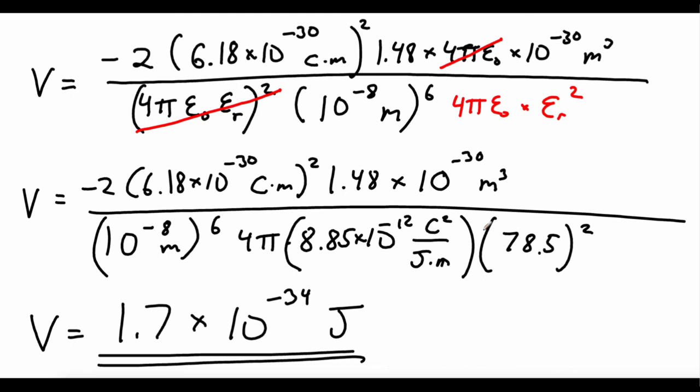Previously, we worked a problem looking at permanent dipole, permanent dipole interaction, in other words, the Keesom interaction, rather than induced dipole, induced dipole, which is the Debye interaction. And we found that it was about 20 times more than this. So we can see that induced dipole, induced dipole, Debye interaction is much weaker than permanent dipole, permanent dipole, Keesom interaction.